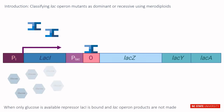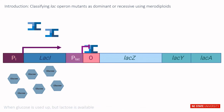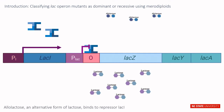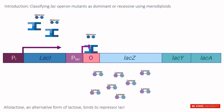When only glucose is available, lac I remains bound to the operator and lac operon products are not made. When glucose is used up but lactose is available, allolactose, an alternative form of lactose, binds to the repressor lac I.